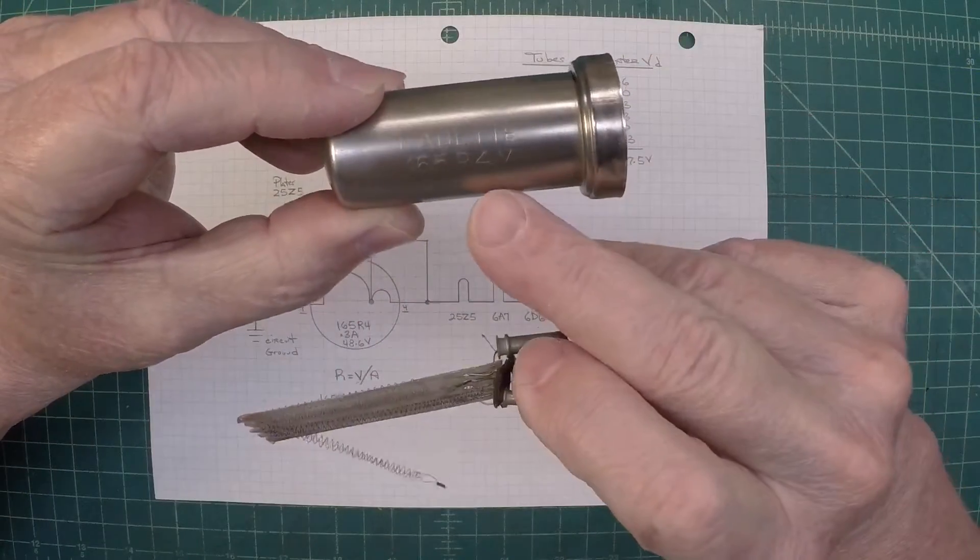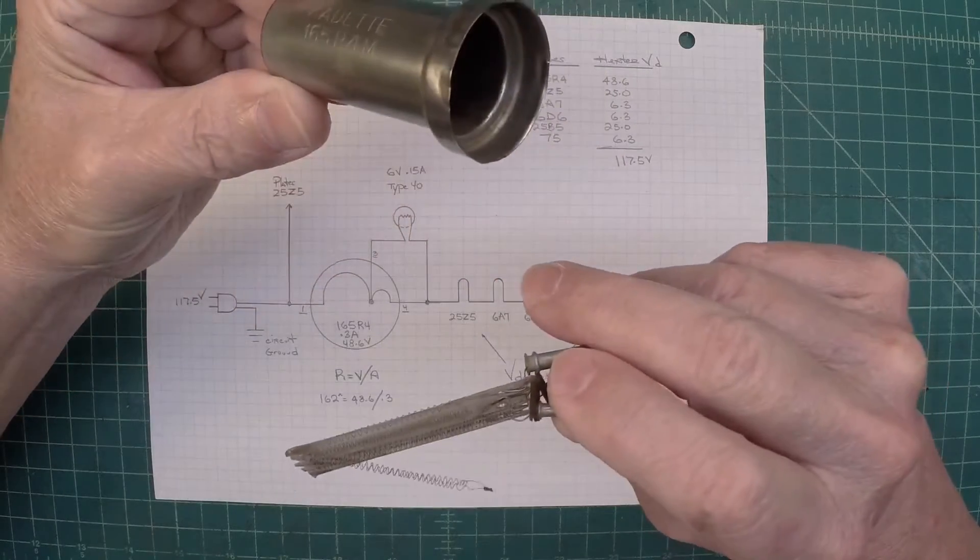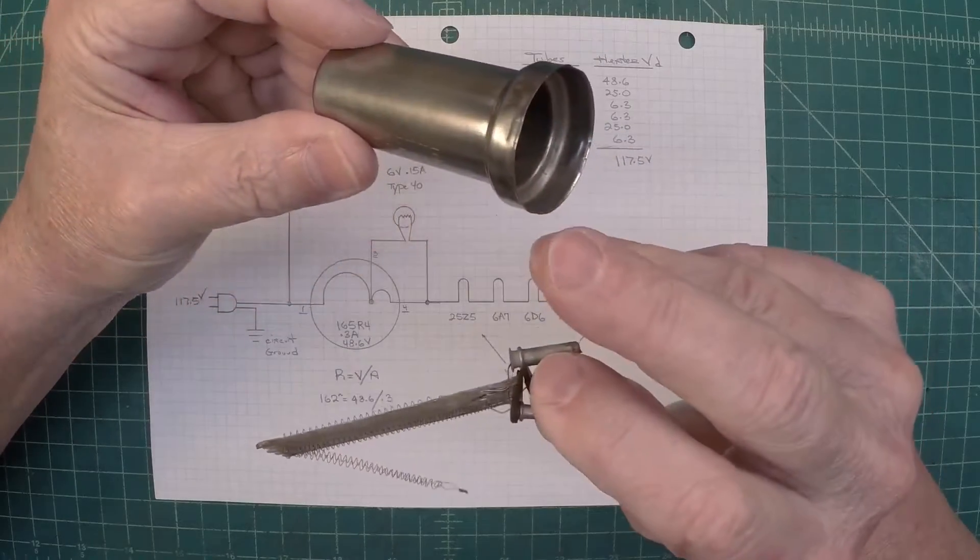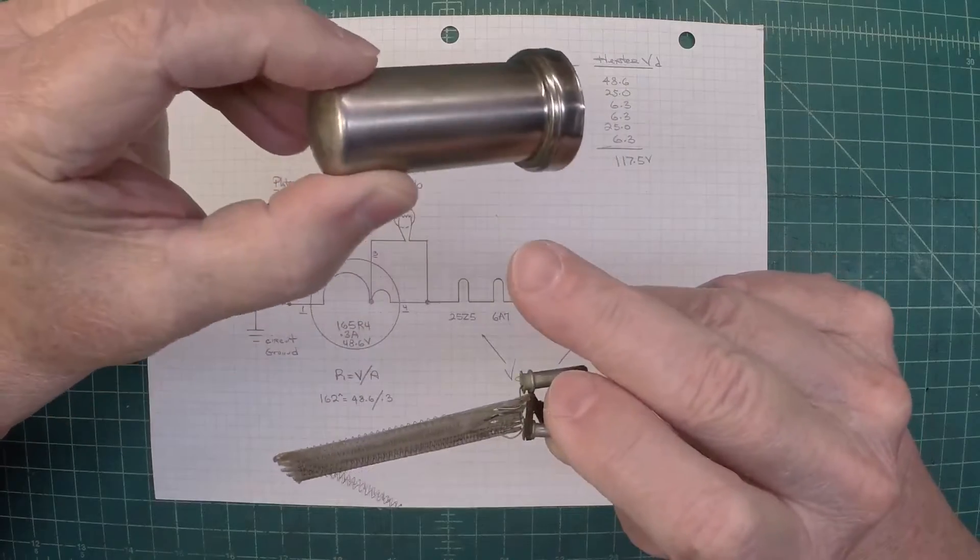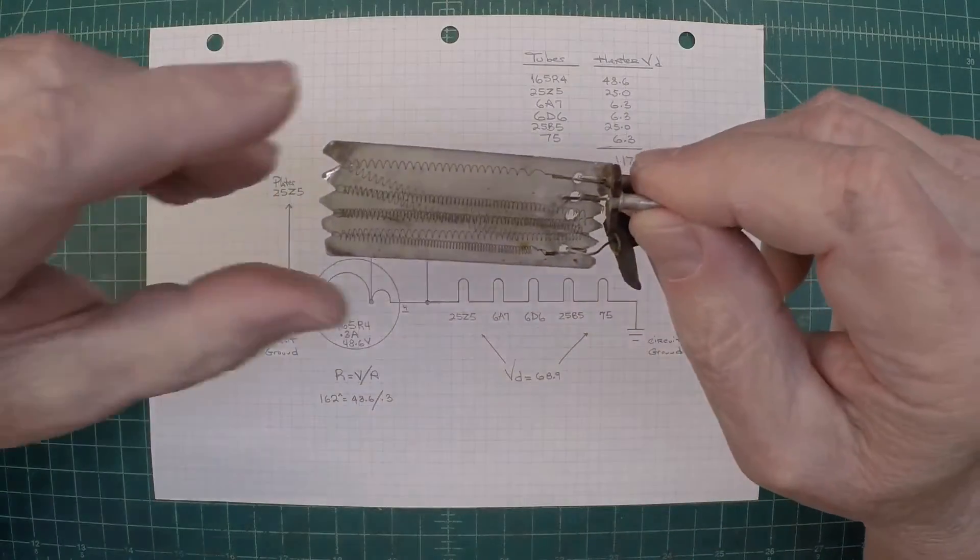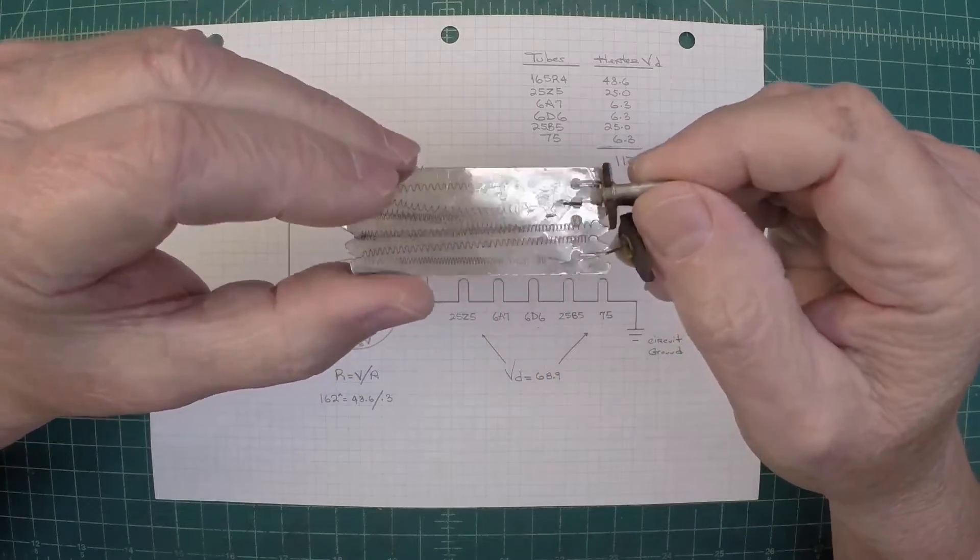Here's a look at the Cadet ballast tube, the 165 R4M. You guys can see that after doing some de-rusting paint removal. I'm gonna leave it in this state I believe. And here's a look at the ballast inside the tube there.